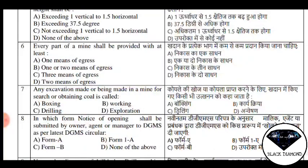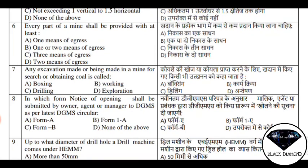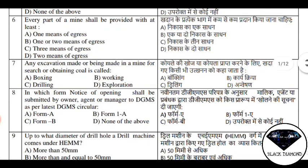Now we talk about the technical round — which answer is wrong. The first question is question number 7: 'Any excavation made or being made in a mine for search for obtaining coal is boxing, working, drilling, or exploration?' The answer given is exploration, but according to Regulation number 2's working definition, any excavation made or being made in a mine for search and obtaining coal is called 'working.' So the answer exploration is wrong.